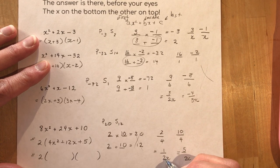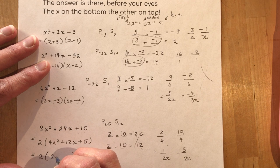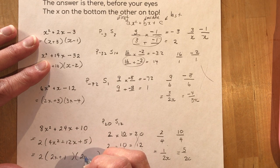So the x on the bottom, the other on top, 2x plus 1, 2x plus 5, you're done. 2x plus 1, 2x plus 5.